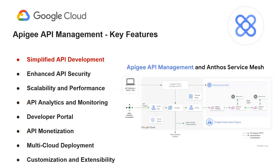Now let's see the key benefits of using Apigee API management. The very first feature is simplified API development. Apigee provides an extensive set of tools and services that simplify the process of designing, developing, and documenting APIs. This includes features such as API design, testing, and documentation, making it easier for developers to create high-quality APIs. In this reference architecture, we can see the positioning of Apigee and how it helps in the integration of various other application components.